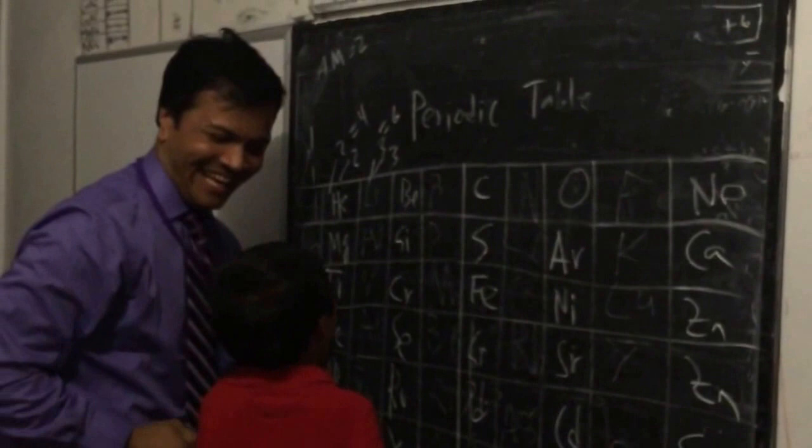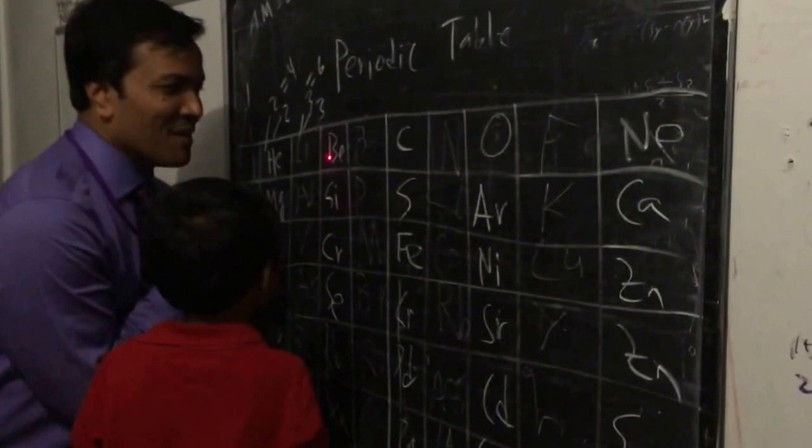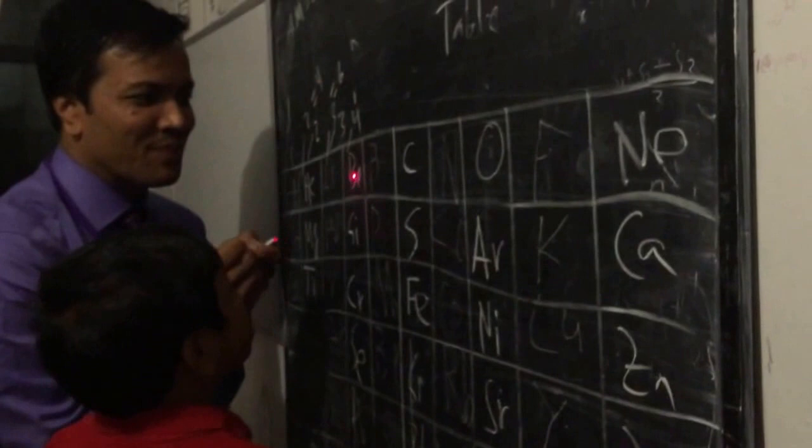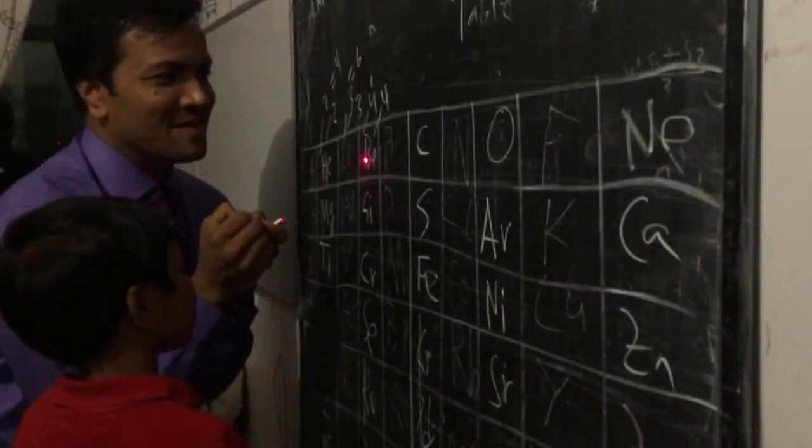What is the atomic number for beryllium? Four. How many protons in beryllium? Four. What is the atomic mass for beryllium? Four plus four equals eight. Fantastic!